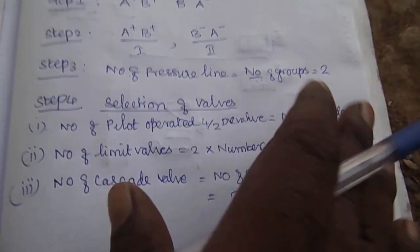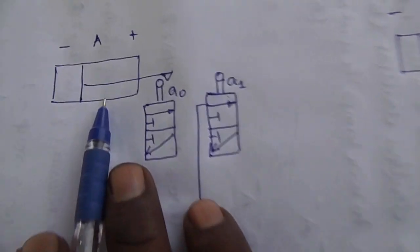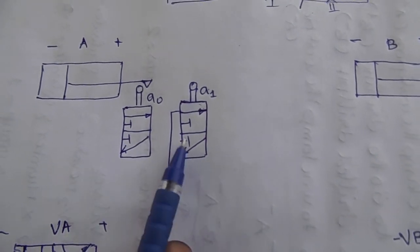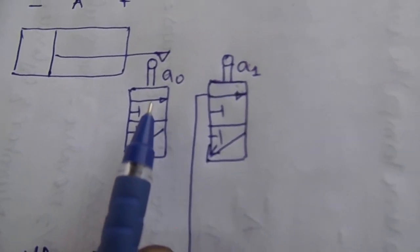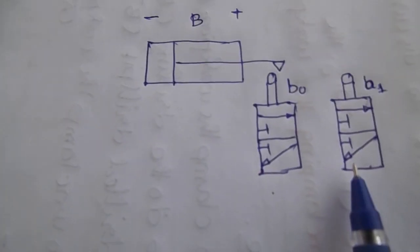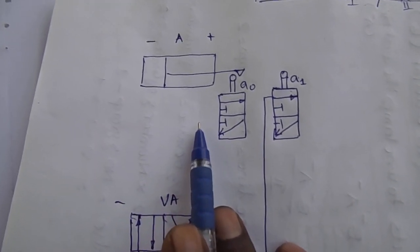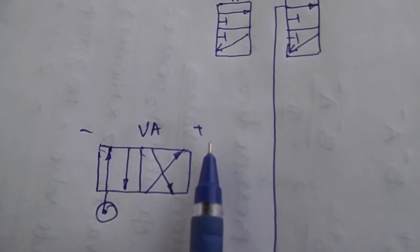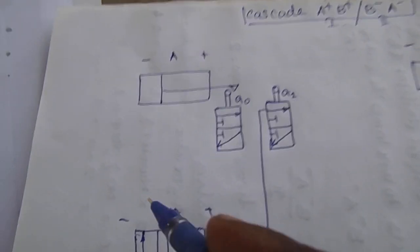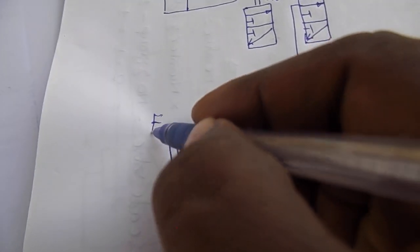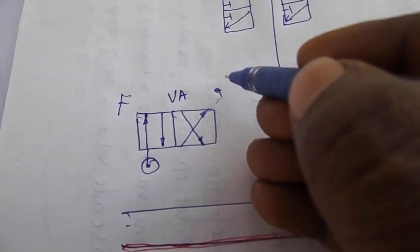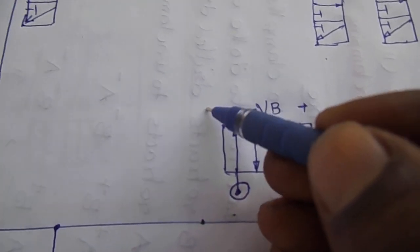We have two groups and one cascade. Let's go to the circuit. We have two cylinders — this is cylinder A and this is cylinder B. Cylinder A and cylinder B are shown here. This is V. A minus — this one is retracted. So the two groups are arranged.